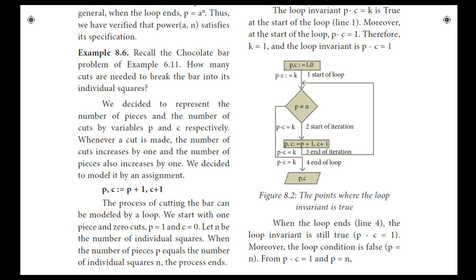For example, starting with a full chocolate bar, the number of pieces is 1 and the number of cuts is 0. When we make the first cut through the center, the number of pieces becomes 2 and the number of cuts becomes 1. As you do one cut, there are 2 pieces.